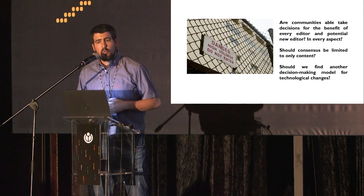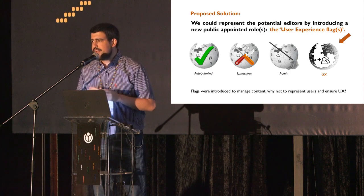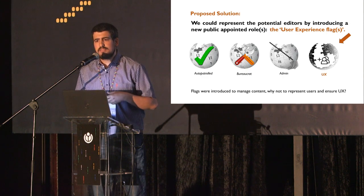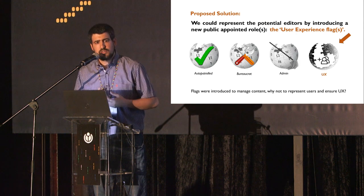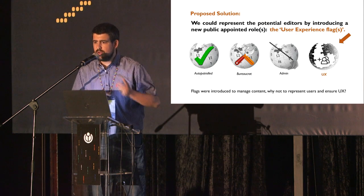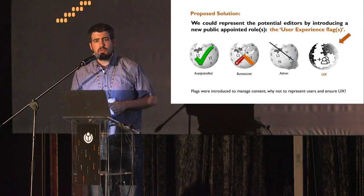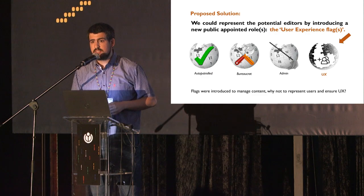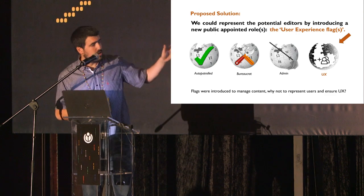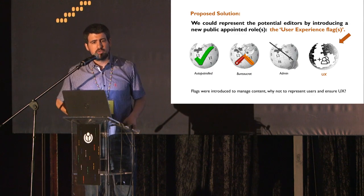My proposal — one of the solutions I think might be useful — is to improve a little bit more the consensus and the community. Wikipedia started as a collaborative project without defined users or roles. Roles were created when needs required them, for content and policies. I think we are getting to the point where we might need roles for users, roles for community, roles for implementing changes, and roles for facilitating information flow. This is why I propose introducing a user experience flag inside communities that would care for community health and user experience.